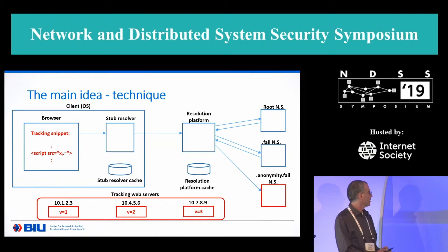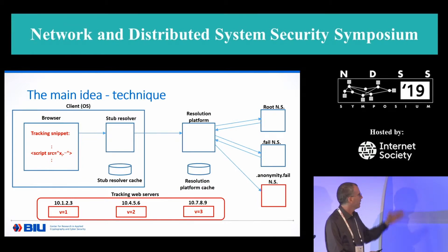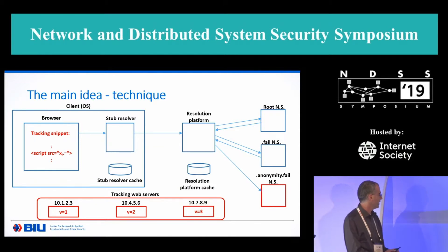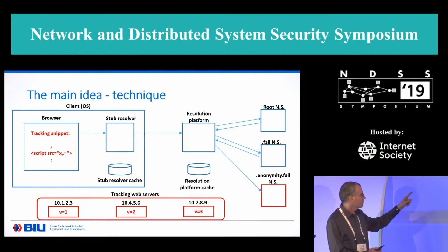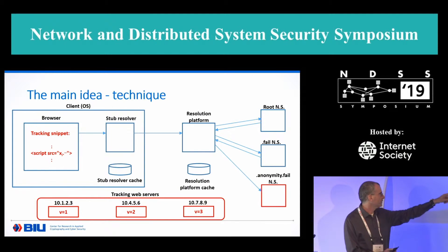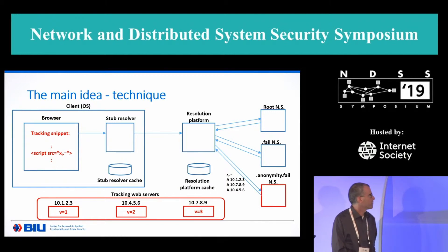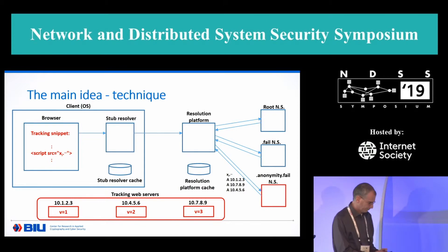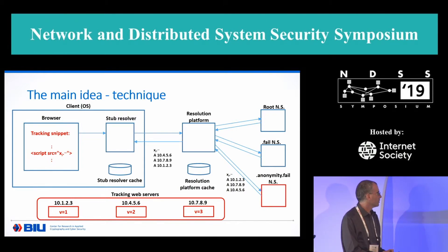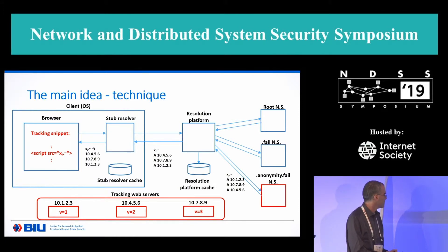The way it works is as follows. Looking at a single resolution — the resolution of XI.anonymity.fail — we force this resolution by having the snippet reference a script with XI.anonymity.fail as its source host. The browser then needs to resolve XI.anonymity.fail and does so through the regular DNS process until the resolution platform asks the authoritative name server for anonymity.fail for the address of XI.anonymity.fail. The authoritative name server responds with a randomly ordered list of the three IP addresses that the attacker owns. This list is then sent back to the stub resolver and also cached locally. The stub resolver responds with this list to the browser, also caches it locally, and the browser takes the first IP address in the list — in this case 10.4.5.6 — and sends it to the tracking web server.